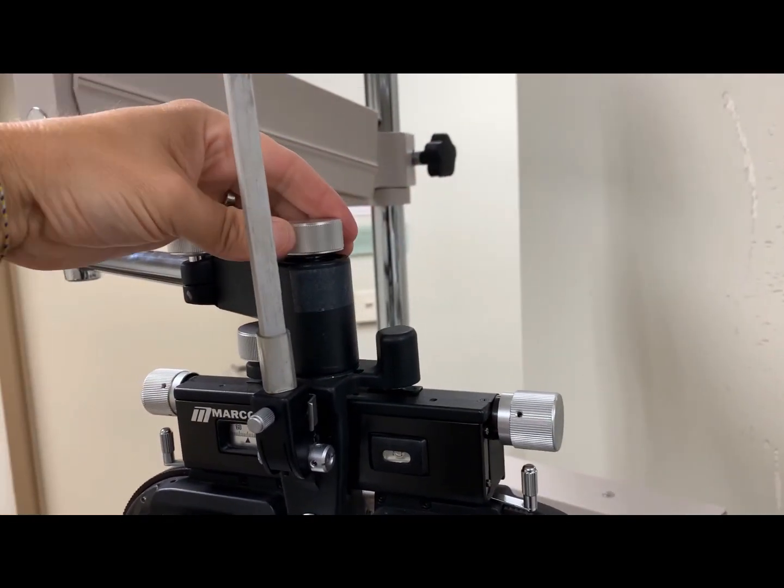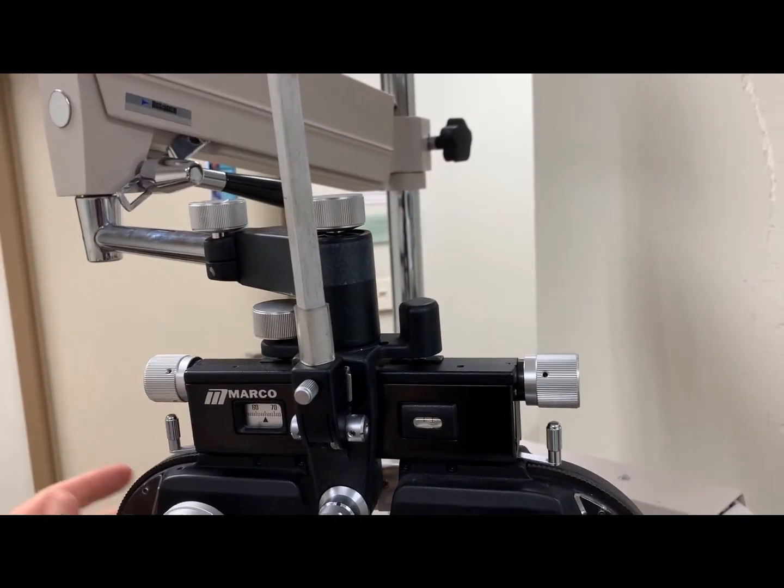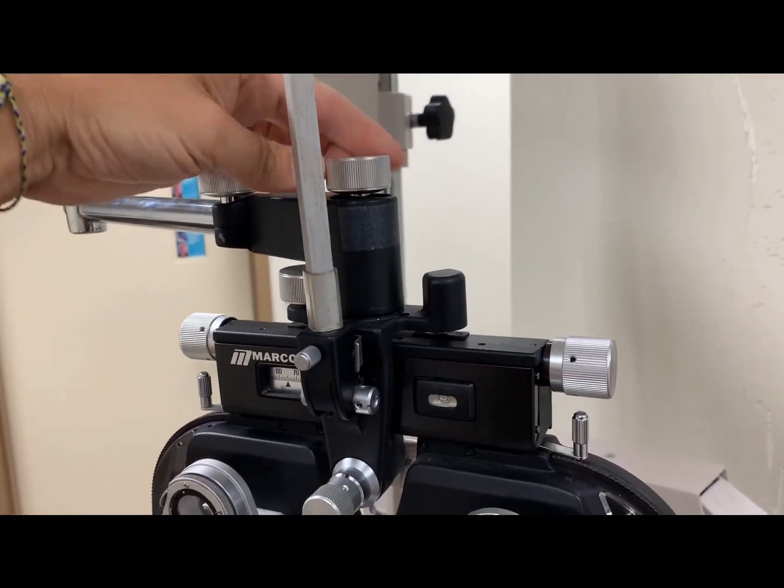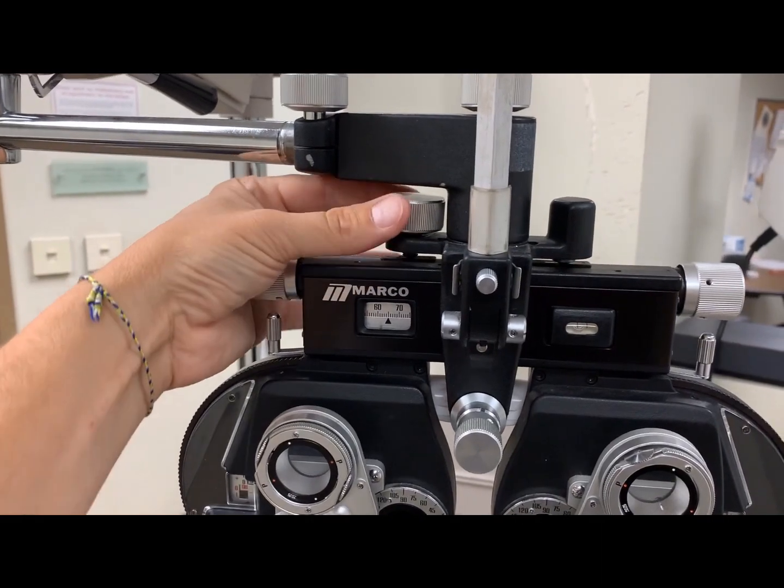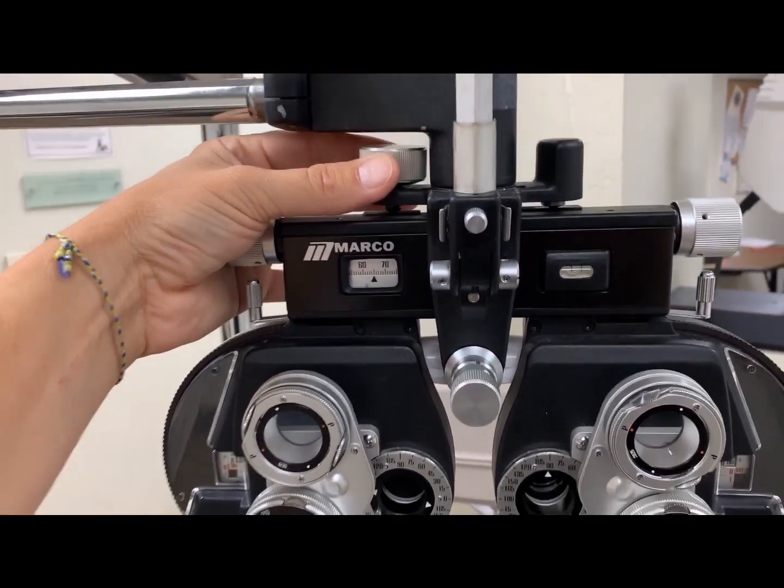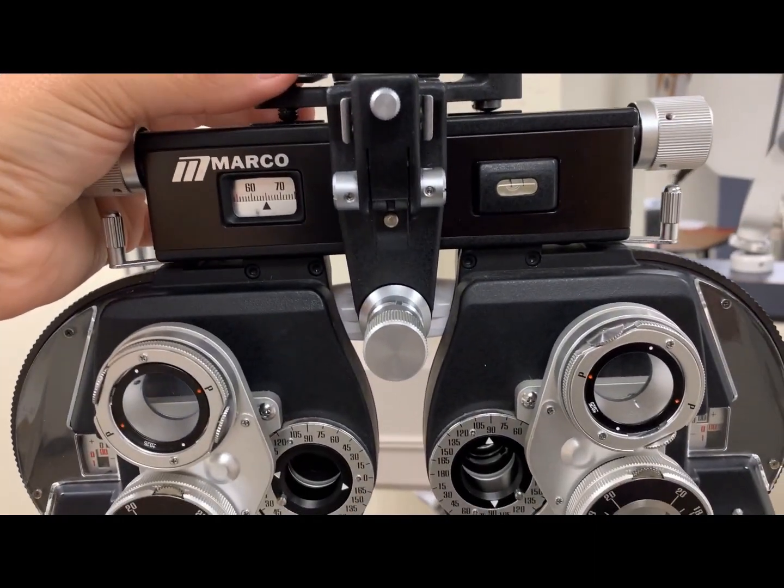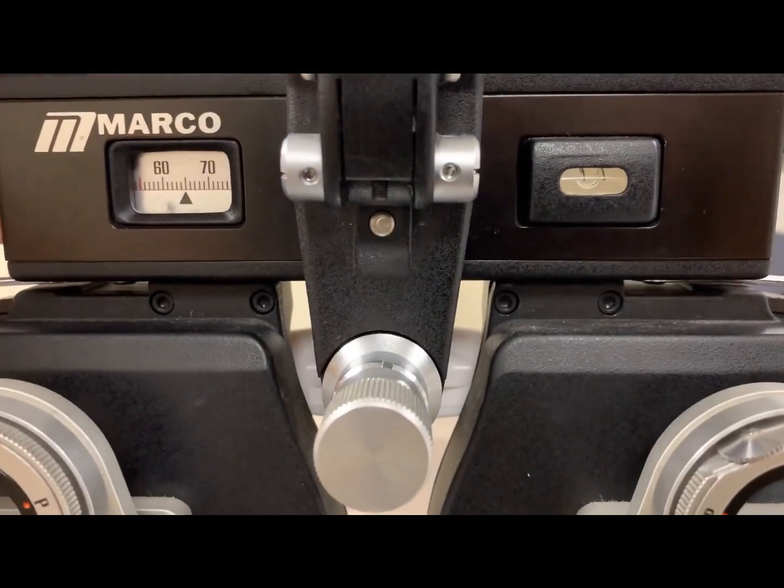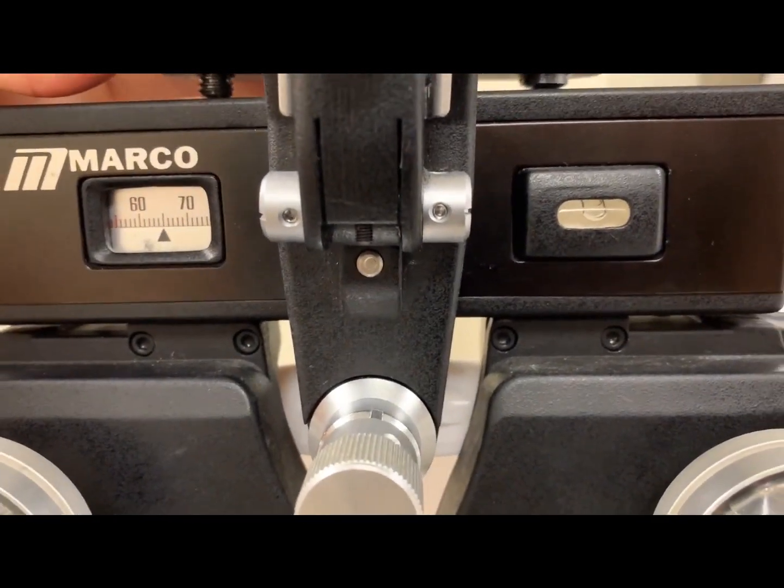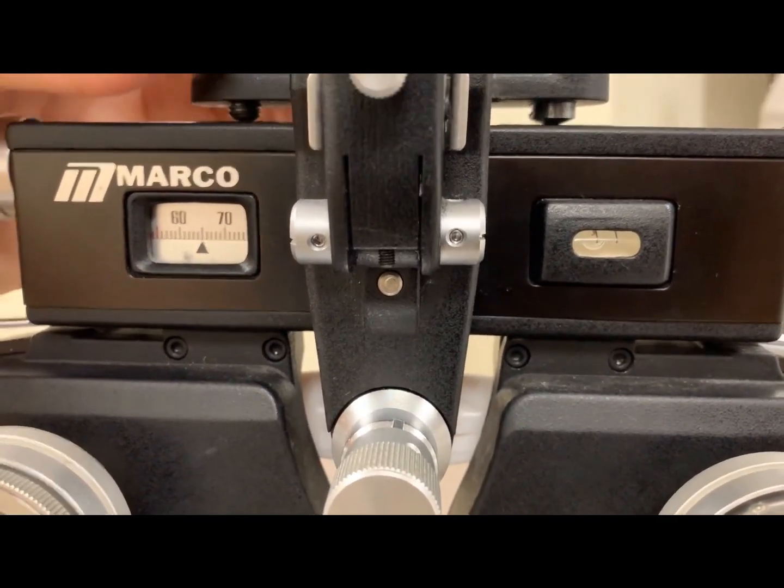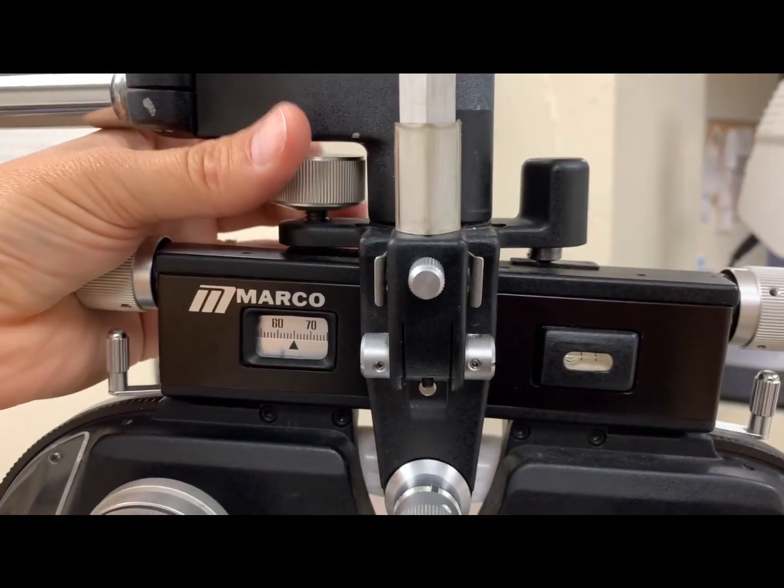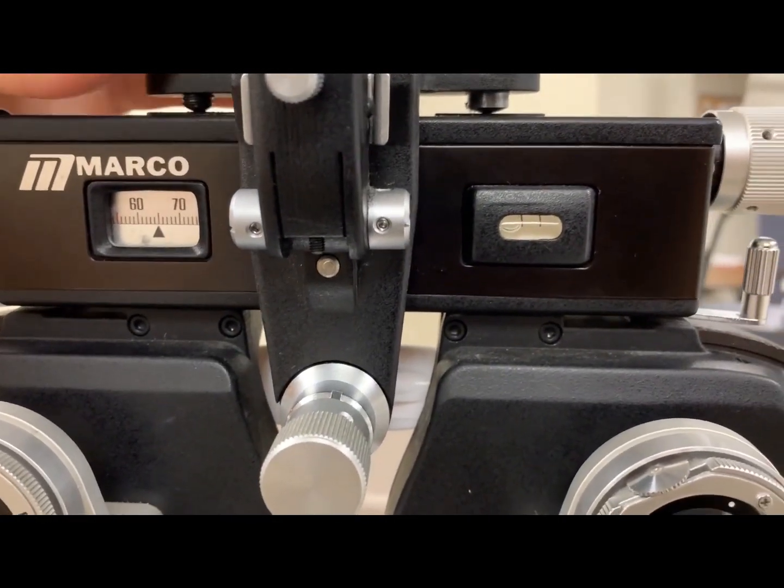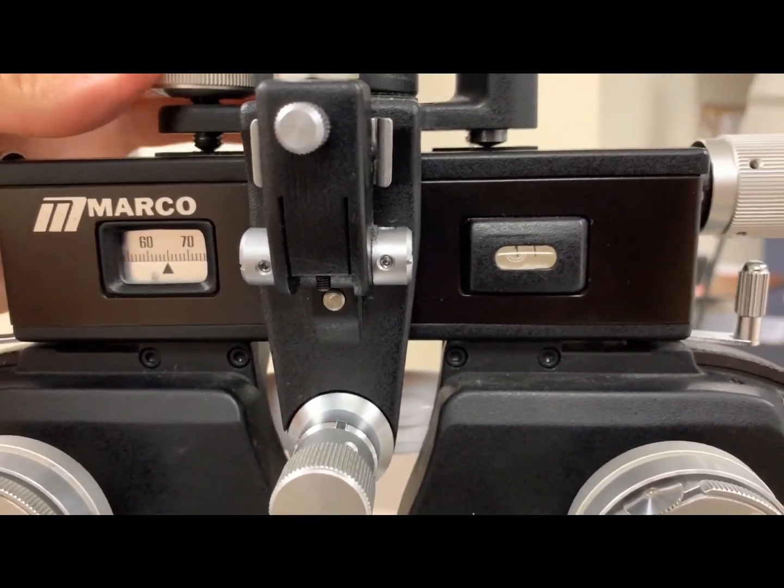On the top, the lock knob allows you to loosen and rotate the phoropter about the C-axis. This knob will simply change the leveling of the phoropter, and you'll notice that there's a leveling bubble that changes as I loosen the knob. You want the phoropter to be level throughout your testing with your patient.